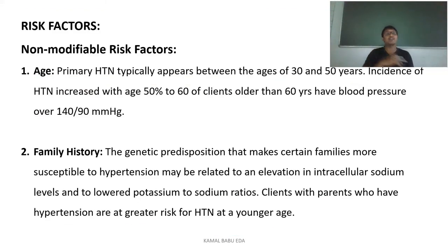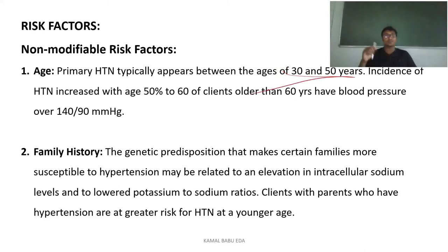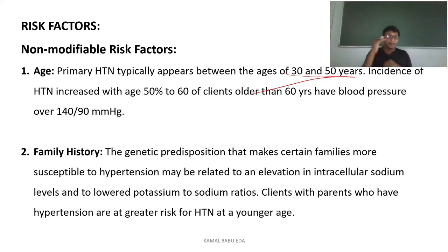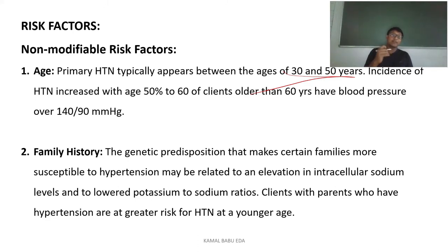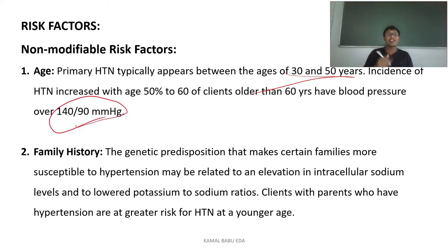Coming to risk factors, we have non-modifiable and modifiable risk factors. Under non-modifiable: first is age — primary hypertension typically appears in the age group 30–50 years, and the incidence increases with age. Previously 50% of the population would enter a hypertensive state, but now it has reached up to 60% of clients. Those older than 60 years are having blood pressure more than 140/90 mmHg, entering stage 1 hypertension.